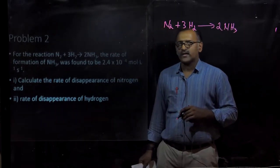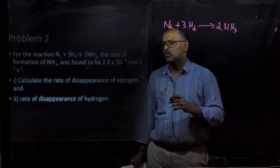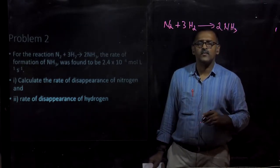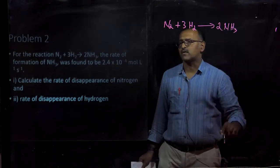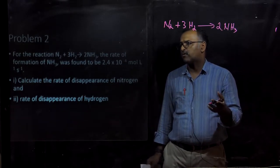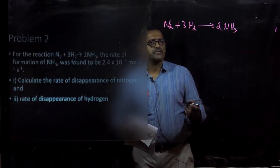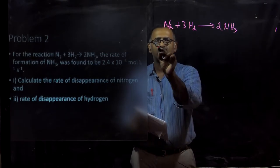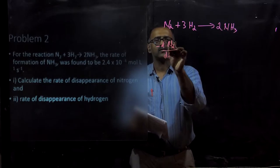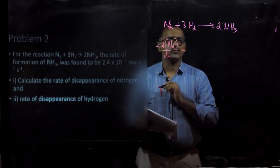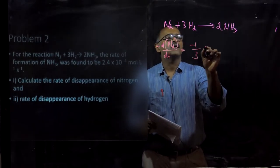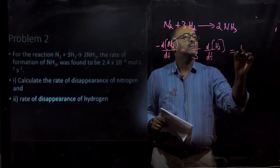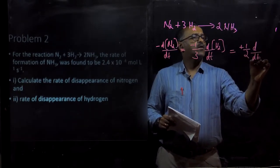For the reaction N₂ + 3H₂ → 2NH₃, the rate of formation of ammonia was found to be 2.4 × 10⁻⁴ mol L⁻¹ s⁻¹. Calculate the rate of disappearance of nitrogen and the rate of appearance of hydrogen. For this reaction, we first write the differential form of the rate equation: −d[N₂]/dt = −(1/3) d[H₂]/dt = +(1/2) d[NH₃]/dt.